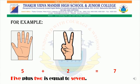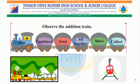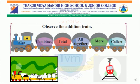For example, five fingers plus two fingers is equal to seven fingers. We read it as: five plus two is equal to seven. Hence, addition is finding the sum or the total by combining two or more numbers. I am sure, students, you all have understood the meaning of addition.